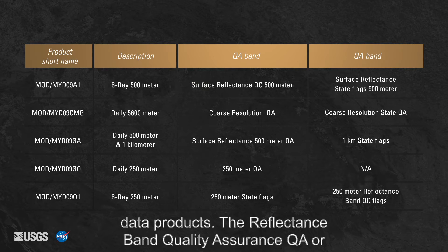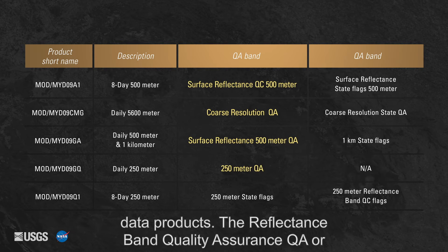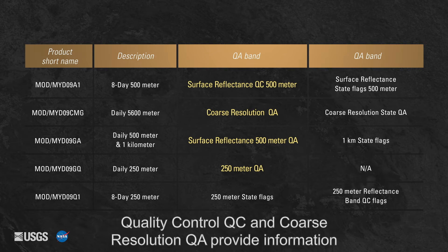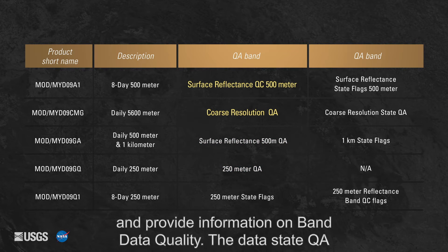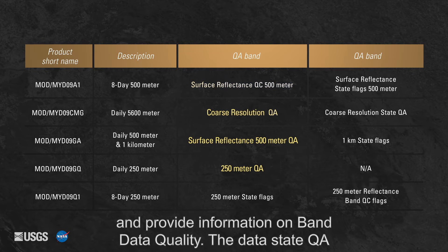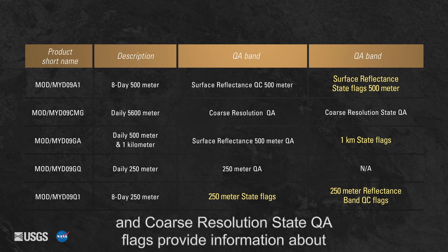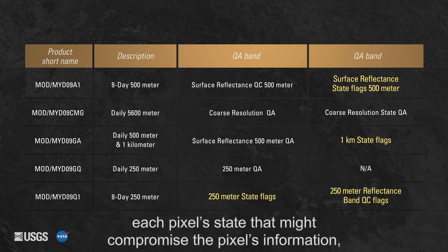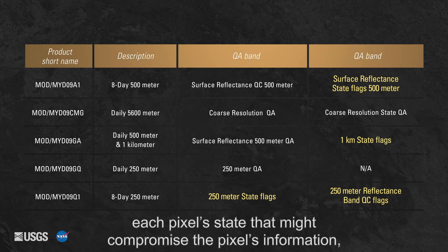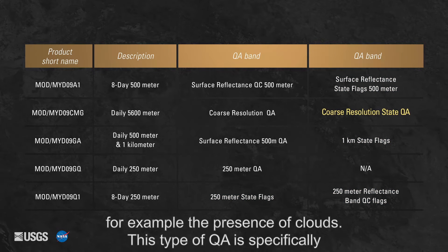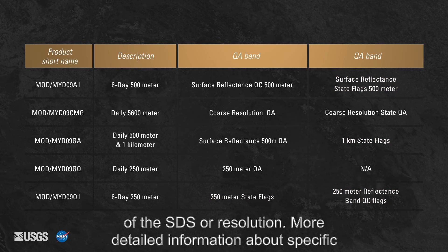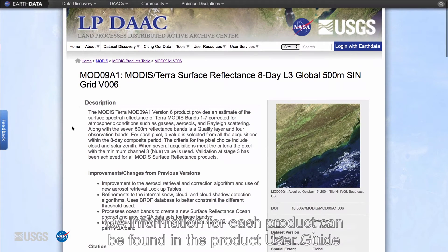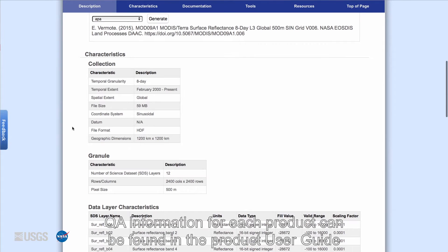The reflectance band quality assurance (QA) or quality control (QC) and coarse resolution QA provide information on the quality of atmospheric correction at the pixel level and provide information on band data quality. The data state QA and coarse resolution state QA flags provide information about each pixel state that might compromise the pixel's information — for example, the presence of clouds. This type of QA is specifically about the pixel and is independent from information about the quality of the SDS or resolution.